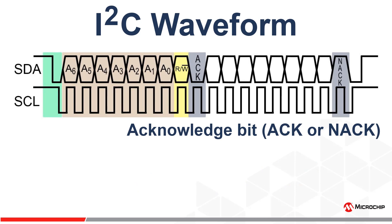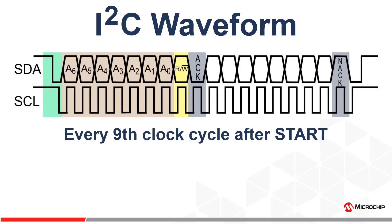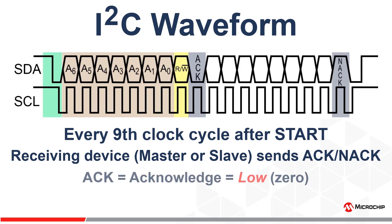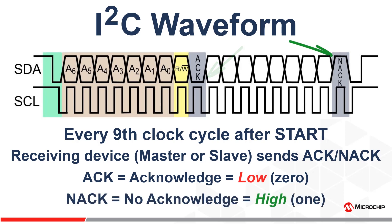The next section is the acknowledge bits. We can think of the acknowledge bit like a handshake between the master and the slave. They occur on every 9th clock cycle, regardless of where we are in the I2C protocol. The device receiving the data is responsible for generating this acknowledge bit, and since I2C is bidirectional, this can either be the master or the slave. A 0 means the receiving device acknowledges, or ACKs, and a 1 indicates the receiving device did not acknowledge, or NACKs. Coming from the slave, an ACK indicates the byte was received correctly. Coming from the master, an ACK requests that the slave transmit the next byte in the operation, while a NACK signals the end of the operation.